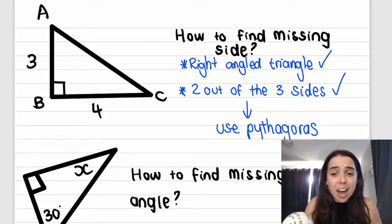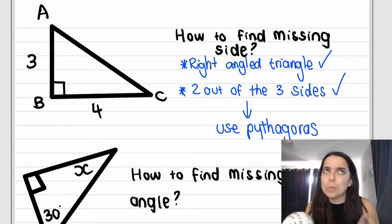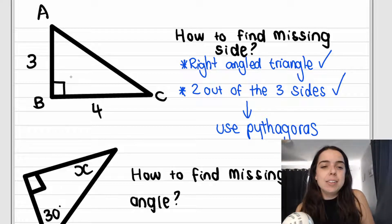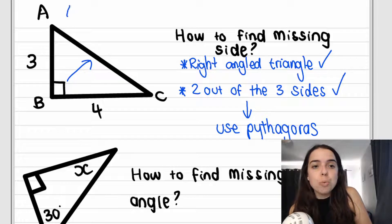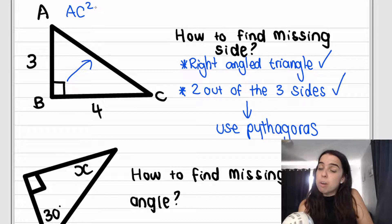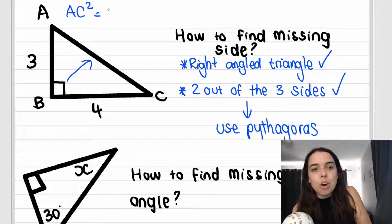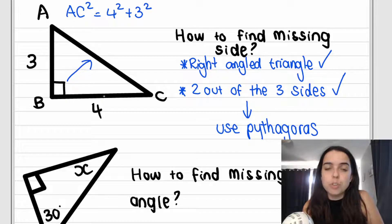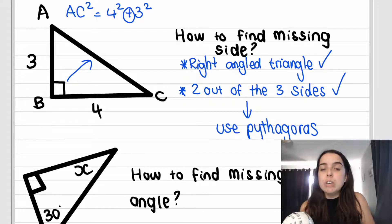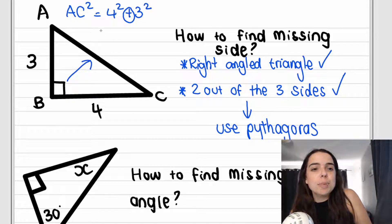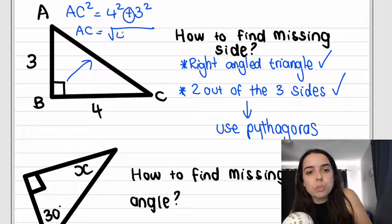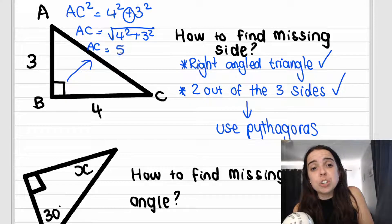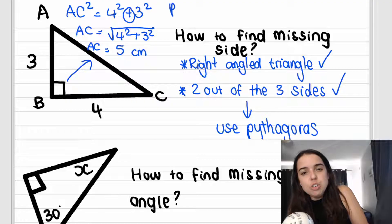You want to immediately use Pythagoras if you're able to. In this case, we're looking for the hypotenuse. So we go AC squared equals four squared plus three squared. If you're looking for the hypotenuse — the long side — you must add. If you're looking for one of the short sides, you must subtract. So you square root four squared, which is 16, plus three squared, which is nine. You're basically square rooting 25, which gives you five units. Write your reason: Pythagoras.